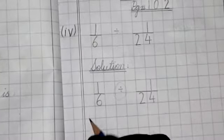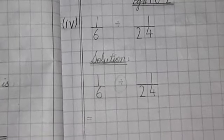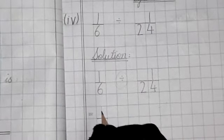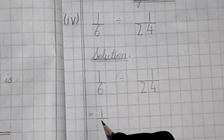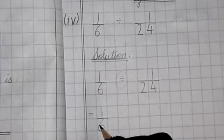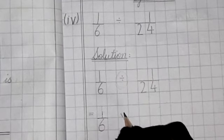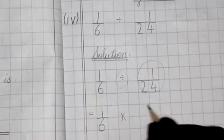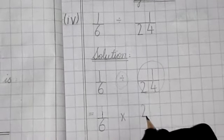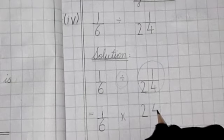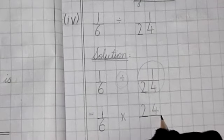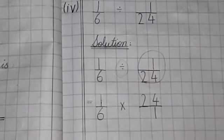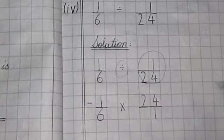Let's start. First of all, equality sign. 1 by 6 as it is. 1 by 6. Divide sign. We change this fraction. What will become? 24 by 1. Now, we have to cut in the crossing. 1 is 1. There is no cutting.